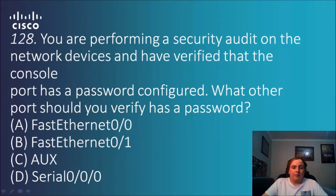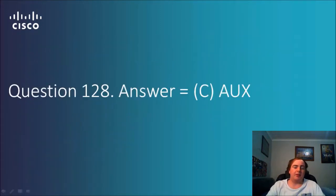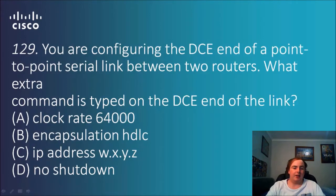Question 128: You are performing a security audit on network devices and have verified that the console port has a password configured. What other port should you verify has a password? Options: fast Ethernet 0/0, aux, and serial 0/0/0. The answer is C — the AUX port, because it connects the modem to the router and allows you to remotely configure settings, so you need to check for any misconfiguration there.